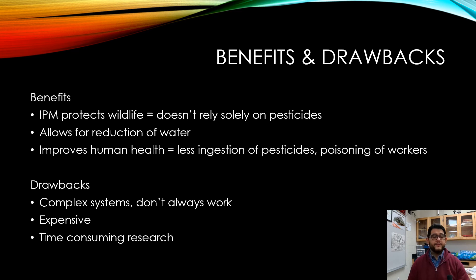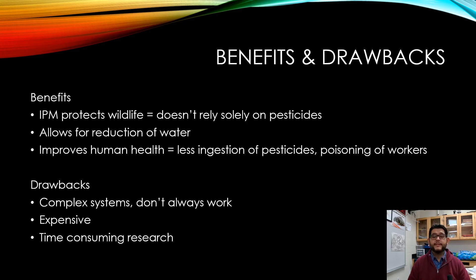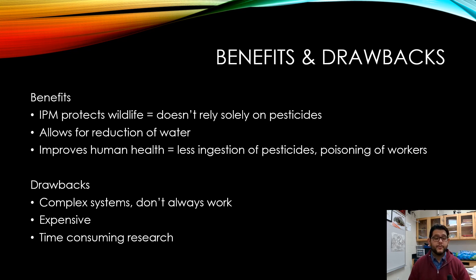The benefit of IPM is that it protects wildlife and doesn't just rely on pesticides. It protects soils, and people eating the crops don't have to worry about pesticides getting into the food source. It reduces water erosion, especially with intercropping, and improves human health. However, these are complex systems — they don't always work, they're expensive, and they require time-consuming research to find out if your controls will work as hoped and planned.